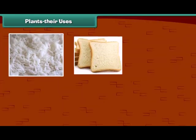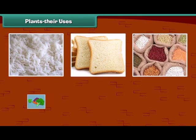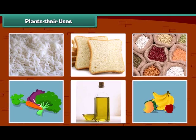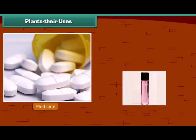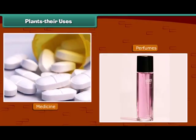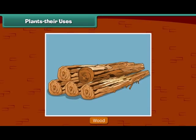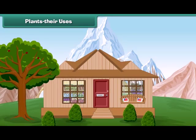We know that we get our food items from plants. Besides the food items, we also get many other things from plants. Many medicines and perfumes are made from plants. Plants also give us wood. In some places, houses are made up of wood.